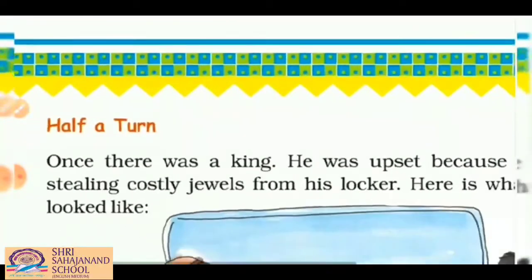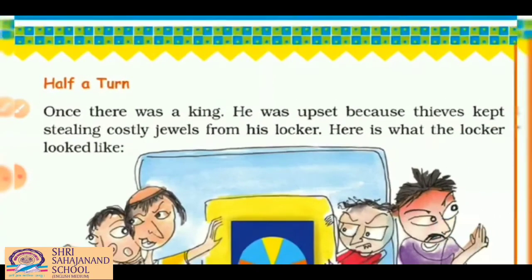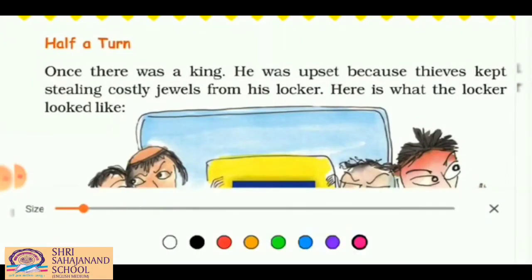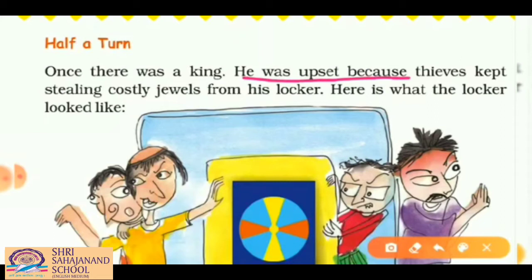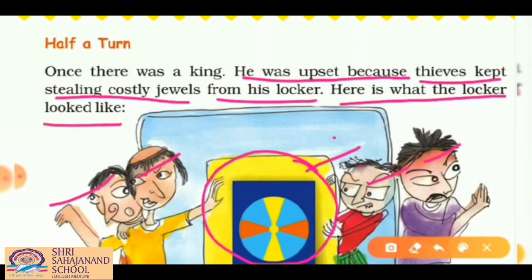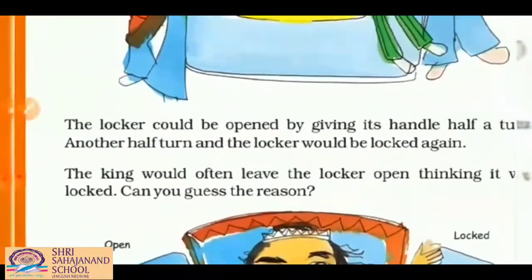Now, today's topic is half a turn, and we have a very interesting story of a king. Once there was a king who was upset because thieves kept stealing costly jewels from his locker. As you can see, the king has a locker, and he was upset because thieves were always stealing the jewels.